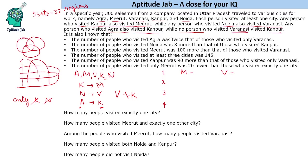For pairs of two cities, starting with Agra: Agra mandates Kanpur, and Kanpur mandates Meerut, making three cities — so Agra cannot appear in any two-city combination. Starting with Meerut: Meerut and Varanasi — both have no compulsion, so this is a valid possibility. Meerut and Kanpur — Kanpur requires Meerut, which is already included, so Meerut and Kanpur is possible. Meerut and Noida — Noida mandates Varanasi, adding a third city, so not possible.